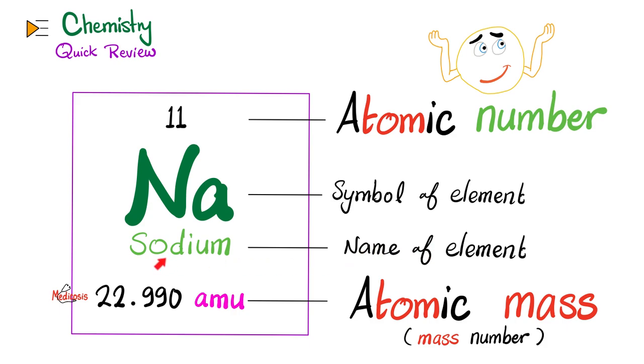The name of the element is sodium. The symbol of the element is Na, which came from the Latin 'natrium.' How about potassium? K, from Latin as well.